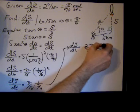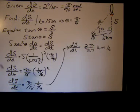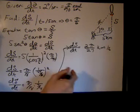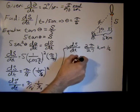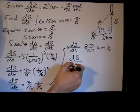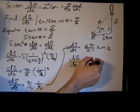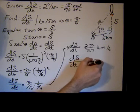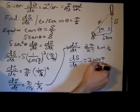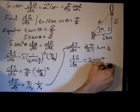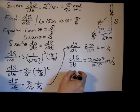I just like velocity in meters per second, so that will actually be ds dt equals converting into meters per second, I'll get 2,000 pi over 27 meters per second. And then to get a decimal approximation.